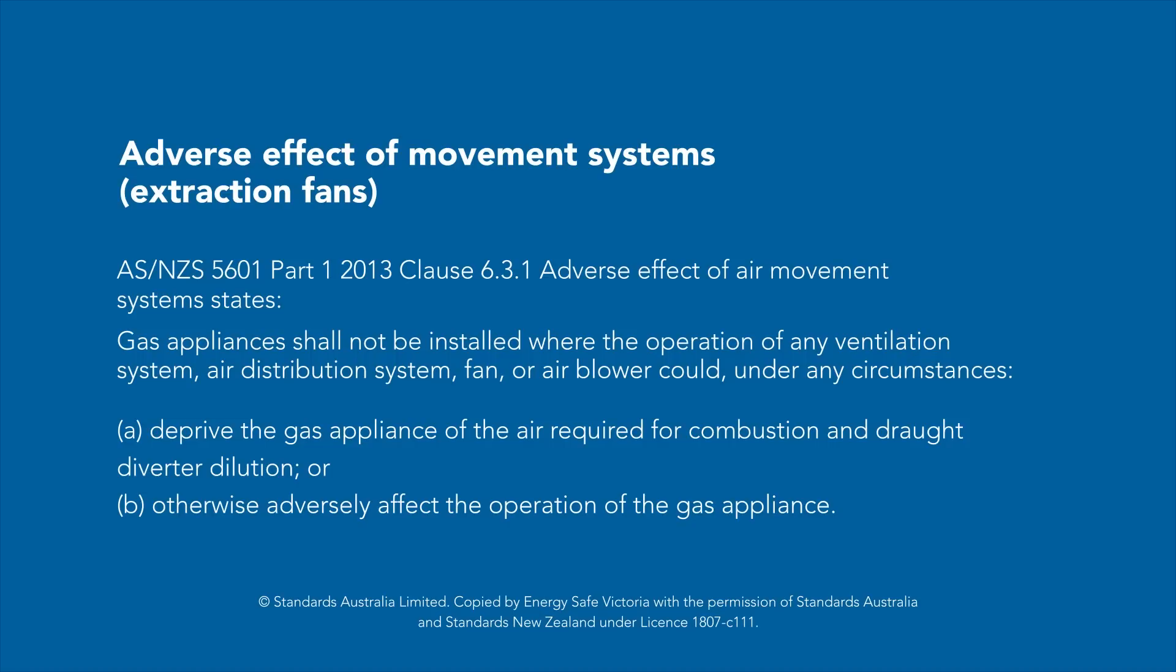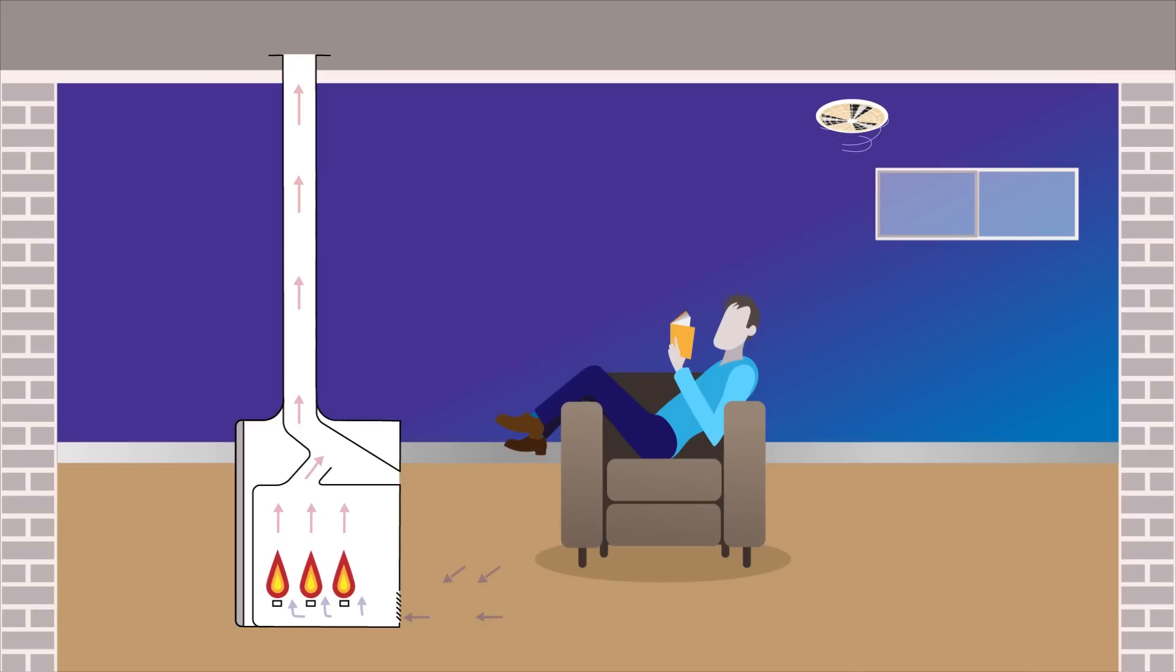A negative pressure environment can be created within the room or building when exhaust fans are turned on, if there is inadequate permanent ventilation. In an attempt to equalise the pressure in the room, air is drawn into the building from external openings.